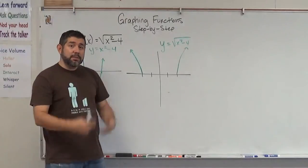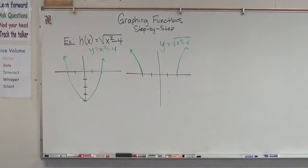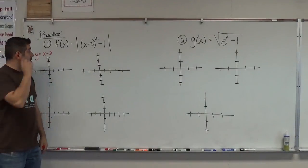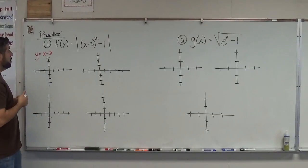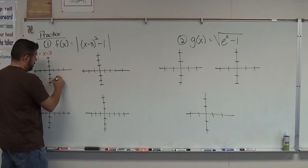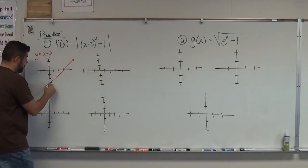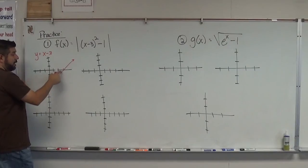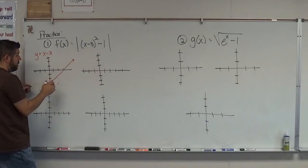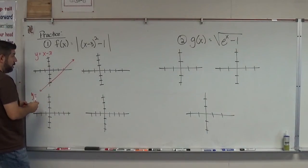I'm going to come back with two practice problems. Here are your practice problems — hopefully you had time to look at them. With this first one, I'm going to start with x minus 3. That's a line — it starts at 3, goes up 1 over 1, and crosses the x-axis at x equals 3. Then we're going to square it: y equals x minus 3 squared.